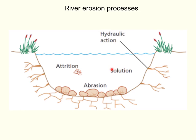Lastly, we have solution. There isn't actually anything next to the word solution on the diagram, because it's the chemical action of the water on the rocks, the minerals, the banks, and the bed of the river. This means that very small particles dissolve and are carried along without being seen. Solution is the one of the four that will work no matter what the conditions of the river are — if it's in flood or if it's a very low flow, solution will work all the time. Whereas the others — attrition, abrasion, and hydraulic action — all work more when there is much more water and therefore more energy in the river.